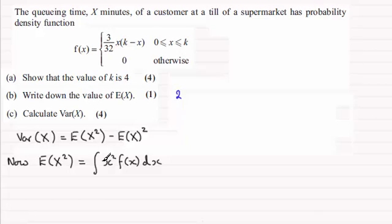And for this distribution it's between 0 and K, and in part A we found out that K was 4, so it's the integral of this from 0 to 4.